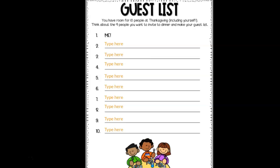Now, you have room for 10 people at Thanksgiving, including yourself. Think about 9 people you want to invite to dinner and make your guest list. Your guest list might be a little smaller than 10 people. Think about the people you will be having Thanksgiving with this year.